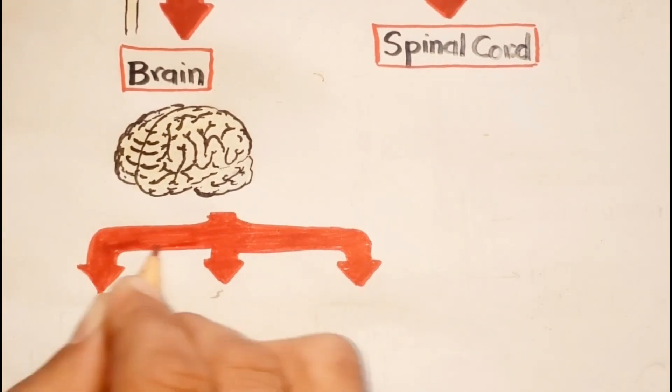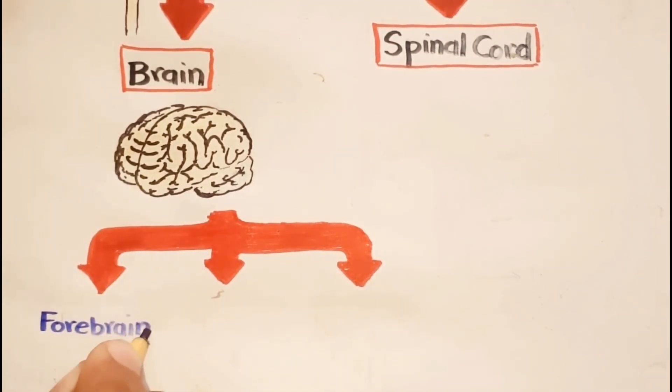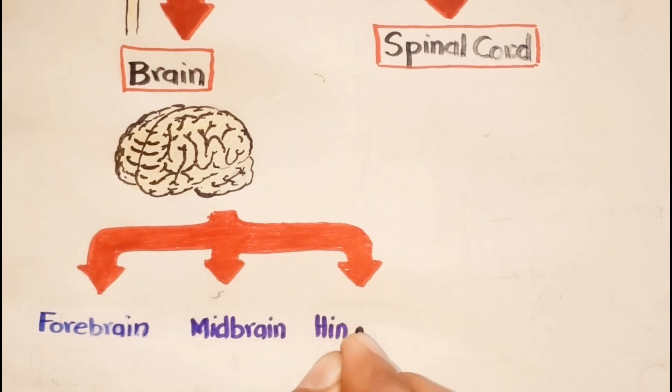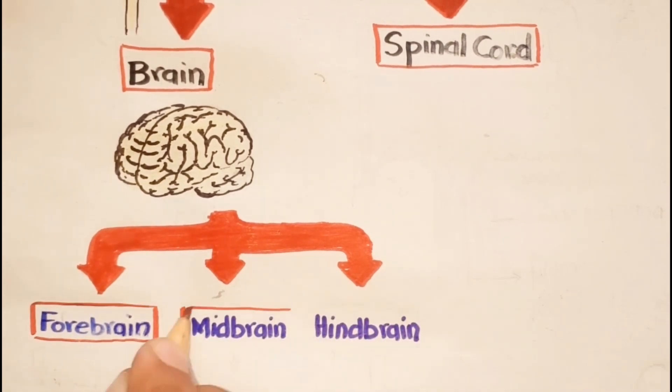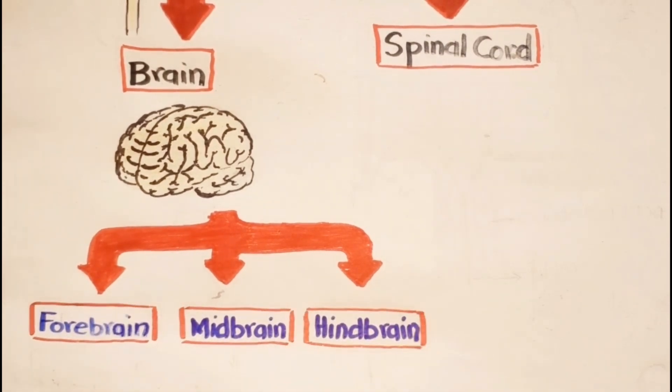The brain is further divided into three sections: the forebrain, midbrain, and hindbrain. We will go into more detail on the brain and nervous system, but we will not go into the very basics. Rather, we will focus on the main anatomical divisions.